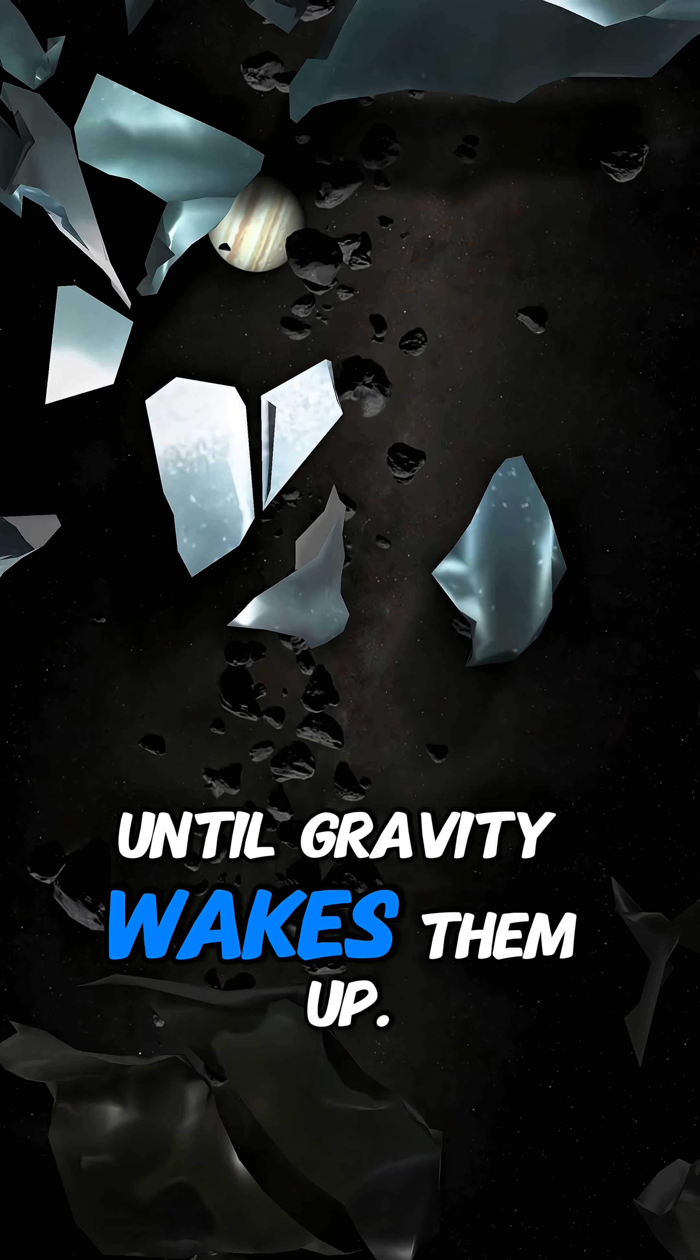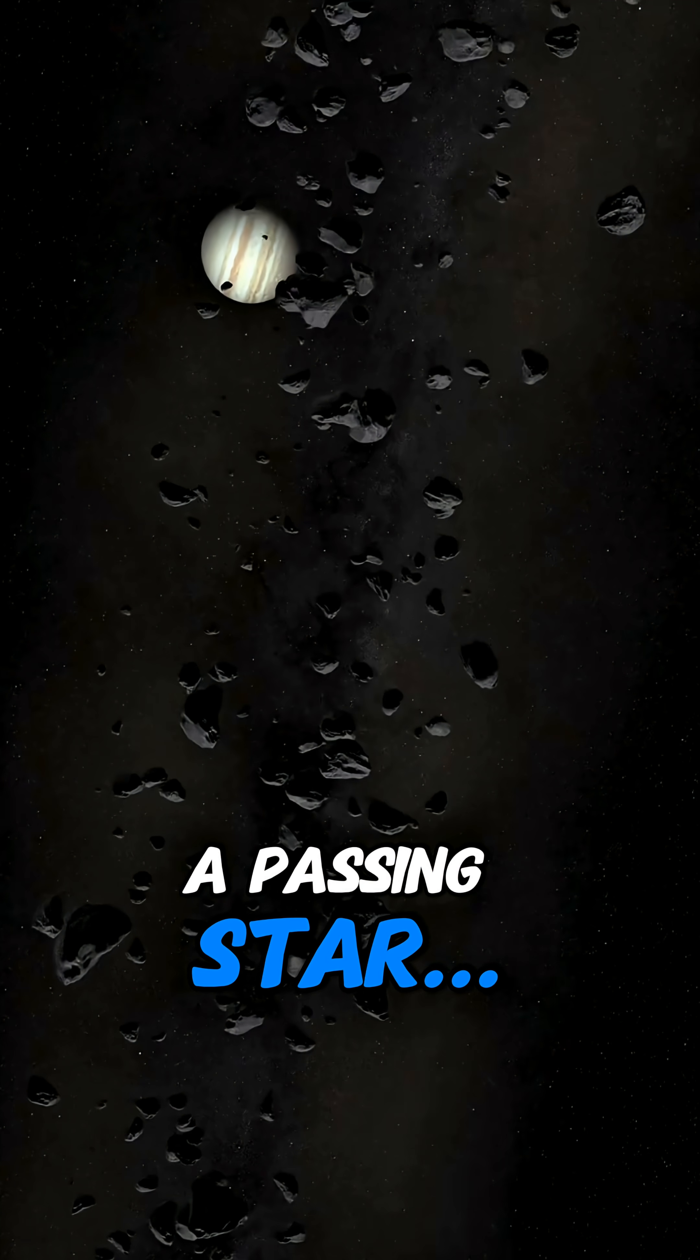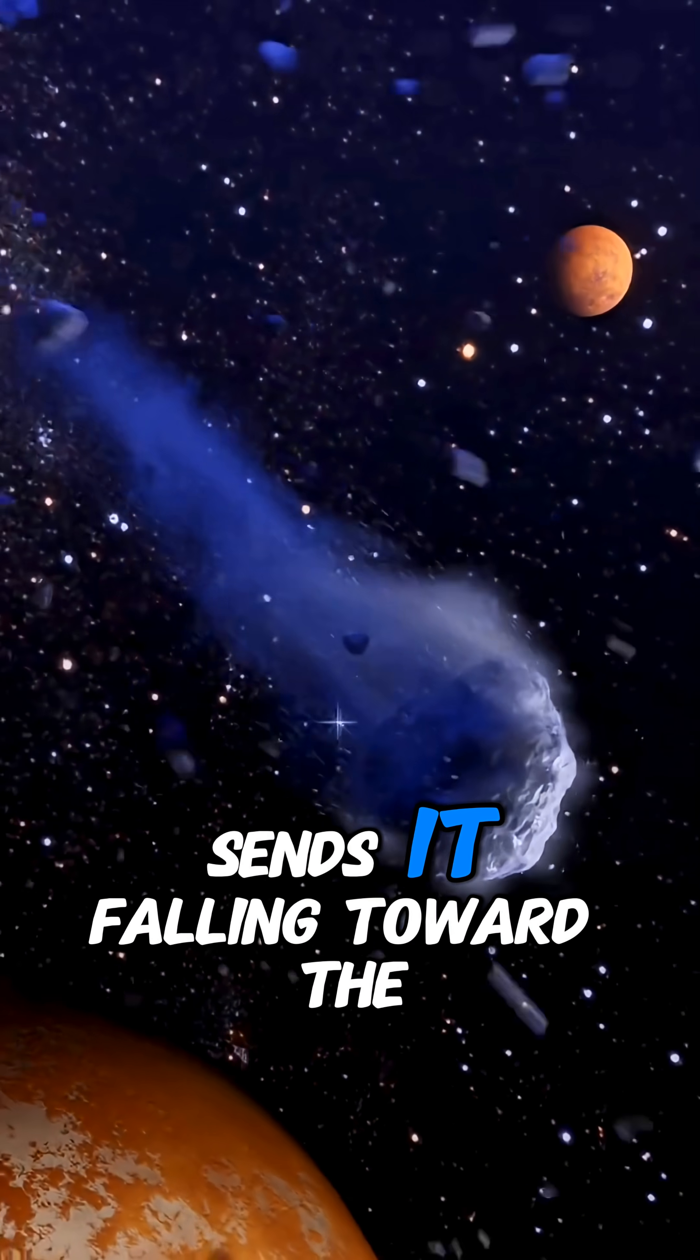For millions of years they sleep in deep freeze, until gravity wakes them up. A passing star, or a push from Jupiter, knocks a comet loose and sends it falling toward the Sun.